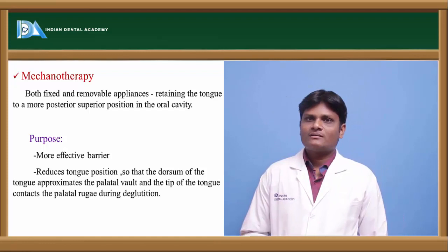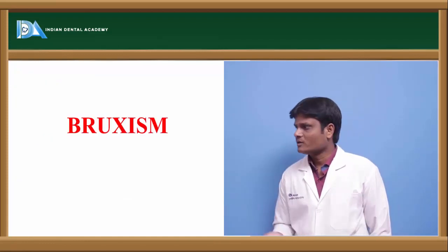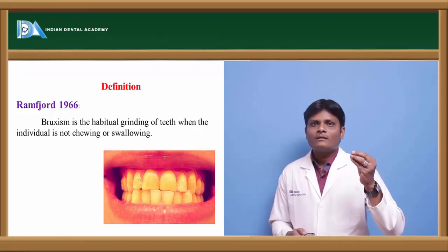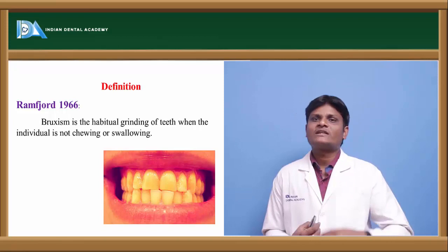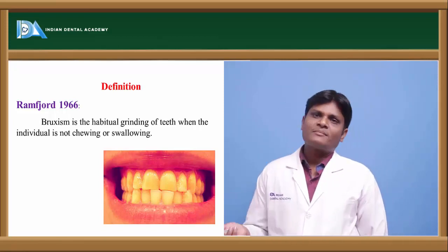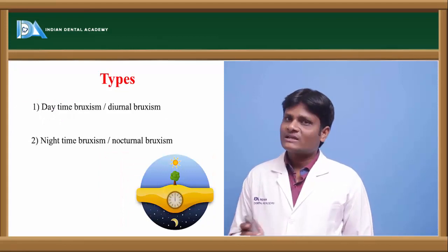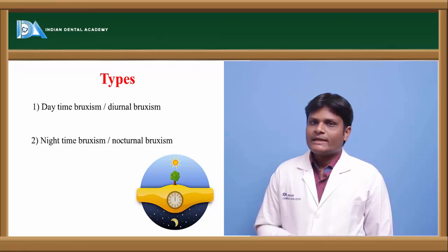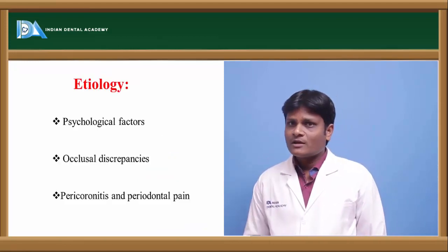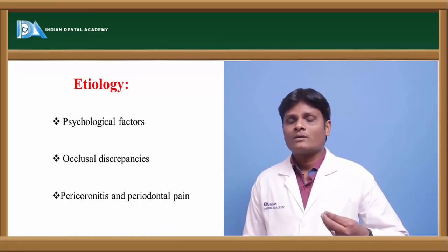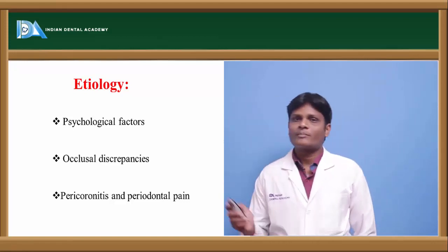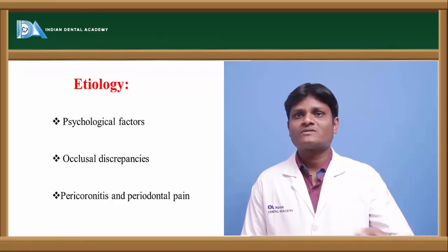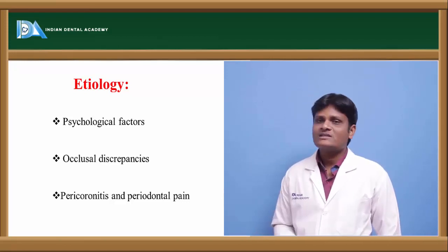The next important habit is bruxism. According to Ramfjord, bruxism is the habitual grinding of teeth when the individual is not chewing or swallowing — during non-functional periods. Bruxism is of two types: diurnal bruxism, occurring during daytime, and nocturnal bruxism, occurring at night. Etiologies include psychological factors like emotional stress, occlusal discrepancies such as premature occlusal contacts and unconnected high points, pericoronitis, and periodontal inflammation or pain.